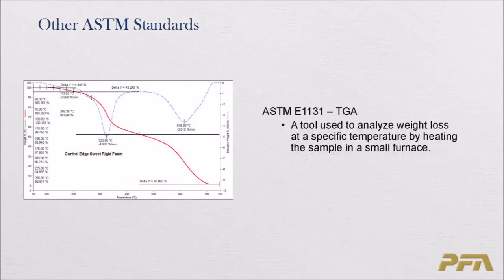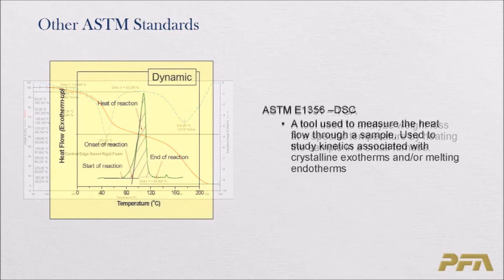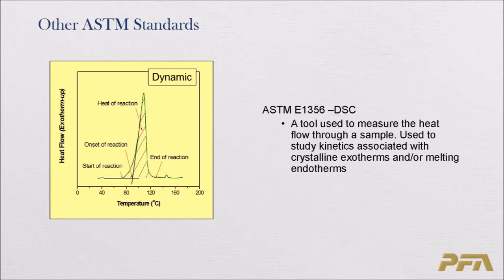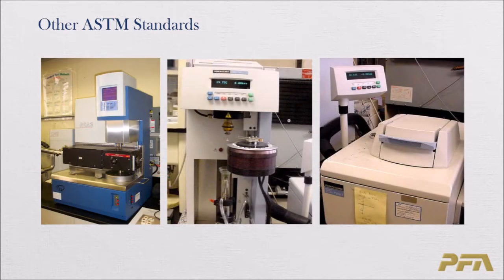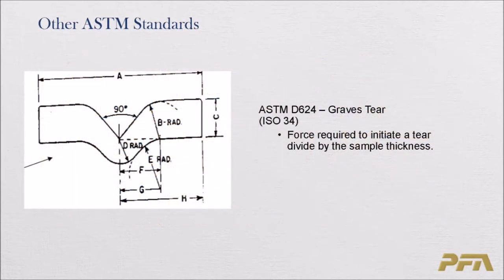The second thermal test is Thermogravimetric Analysis (TGA), a tool used to analyze weight loss at a specific temperature by heating a sample in a small furnace — used for measuring thermal degradation. Third is Differential Scanning Calorimetry (DSC), which measures heat flow through a sample to study kinetics associated with crystalline exotherms and melting endotherms. This equipment covers DMTA/DMA, TGA, and DSC.